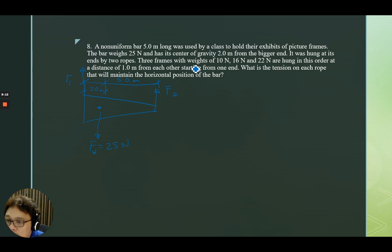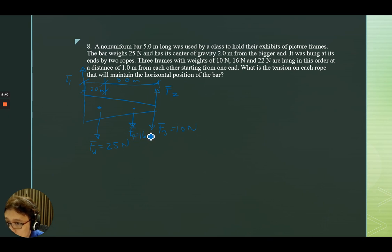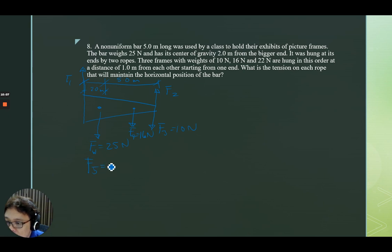Three frames: 10 newtons, 16 newtons, and 22 newtons, hung at 1.0 meter intervals starting from the smaller end. So F3 is 10 newtons at 1 meter from the smaller end, F4 is 16 newtons at 2 meters, and F5 is 22 newtons at 3 meters. That is also where FW acts, since 5 minus 2 equals 3 meters from the smaller end. So F5 is 22 newtons, and FW acts at the 3-meter mark.